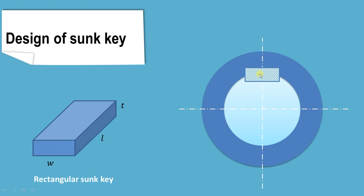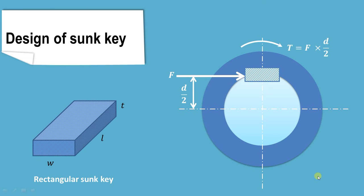We have inserted the key in this particular slot or passage, which connects the shaft with the hub. As you can see, this is the tangential force which is applied when the shaft rotates. This force multiplied by the radius is the torque exerted on the shaft. The shaft, key, and hub act as one unit and are therefore all subjected to the same torque, that is force into radius — F into D divided by 2. Because of this tangential force, shear of the key will take place at the junction of the two materials, that is the shaft material and hub material.